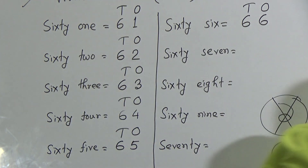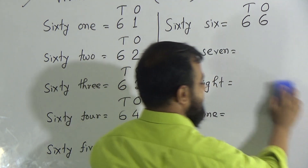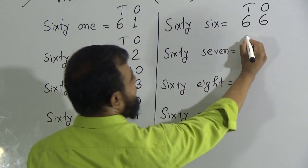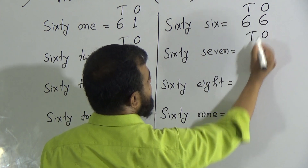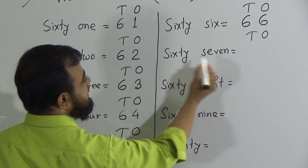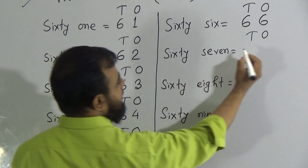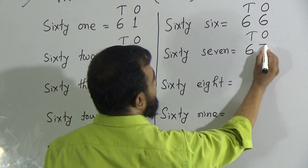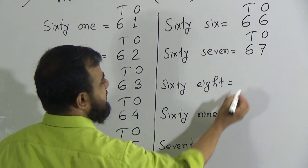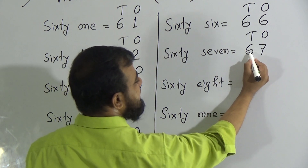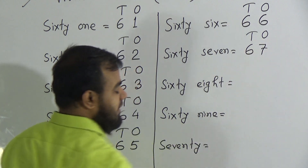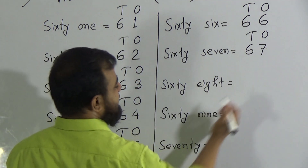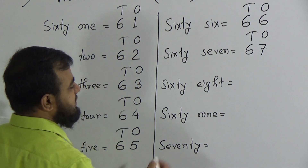Our next number is 67. To write down 67, we indicate the place value tens and ones. To write 60, we write 6 in the tens place. To write 7, we write 7 in the ones place. Six tens and seven ones makes the number 67, or you can say six and seven makes the number 67.